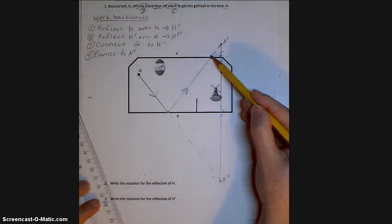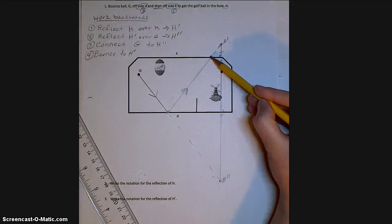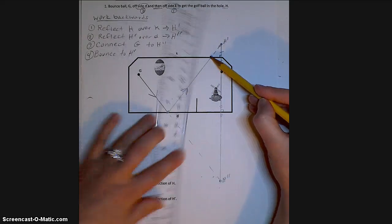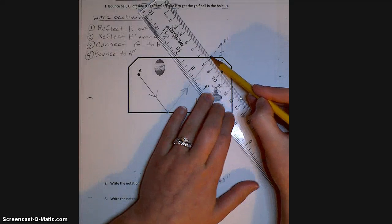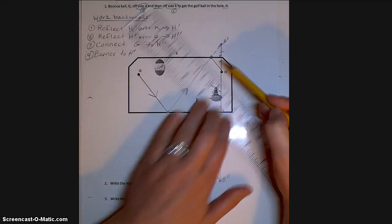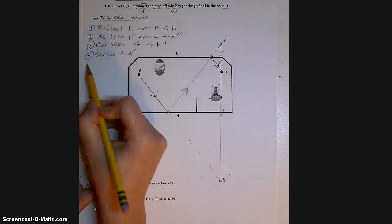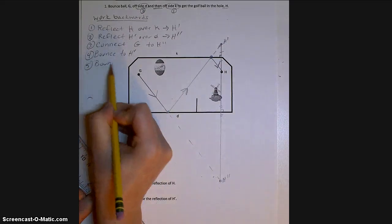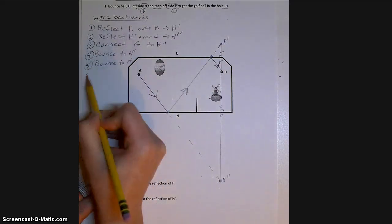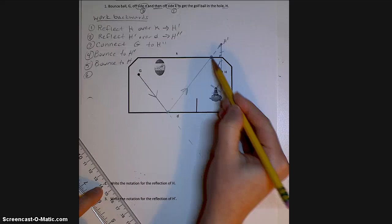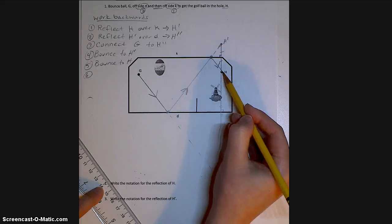After you bounce up to H prime, we're going to again locate another point on the wall K where it will bounce, into the hole for a hole in one. So last step is to bounce to H. Now we can see the path of the golf ball will be traveling.